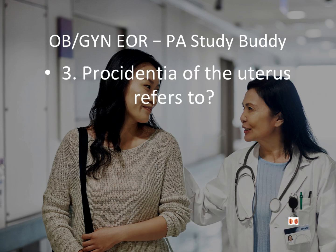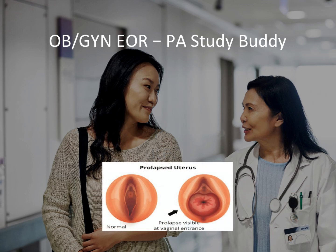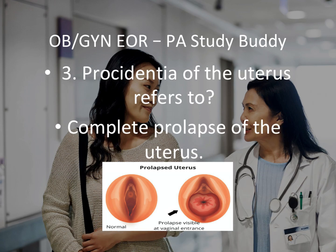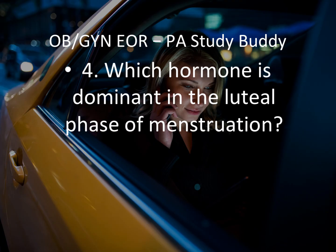Question 3: Procidentia of the uterus refers to what? That would be complete prolapse of the uterus. They can tell you partial or complete and give you some other scenarios, but complete prolapse of the uterus is procidentia. You can see an image here — normal on the left and complete prolapse on the right. Procidentia of the uterus: complete prolapse.